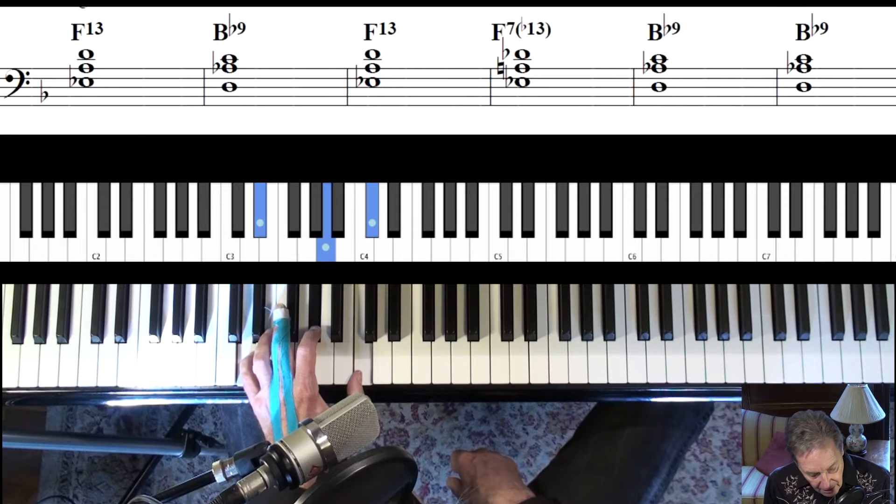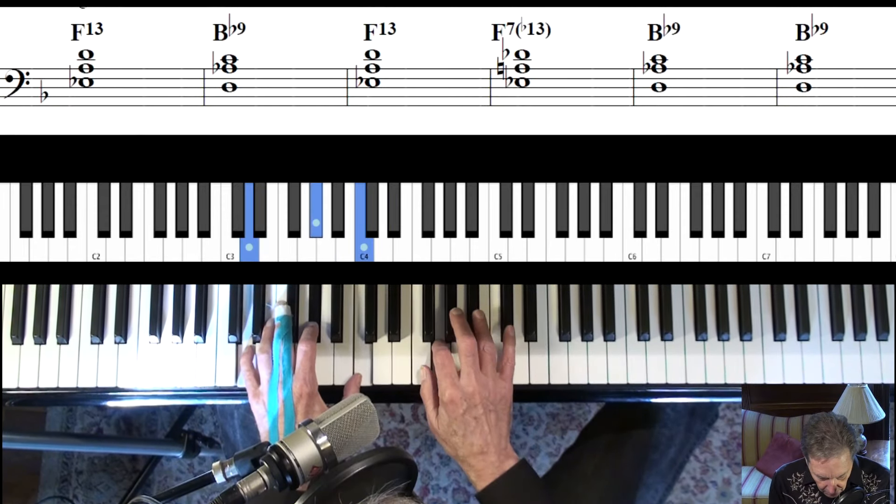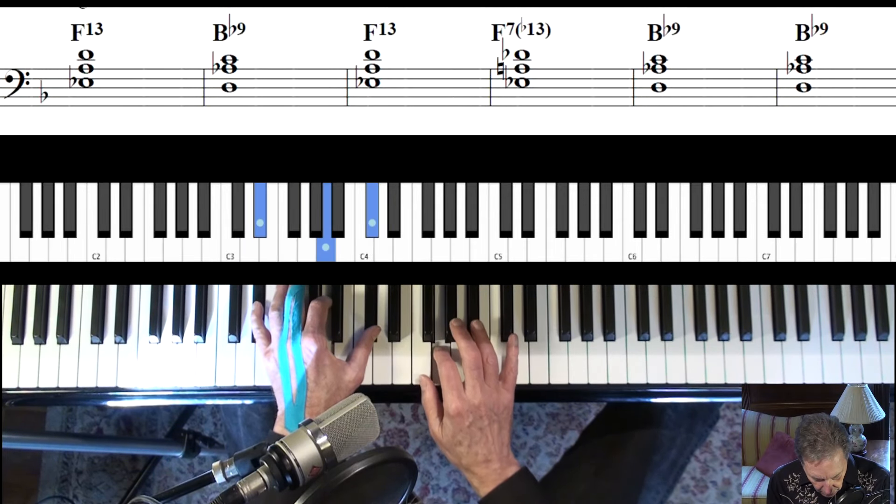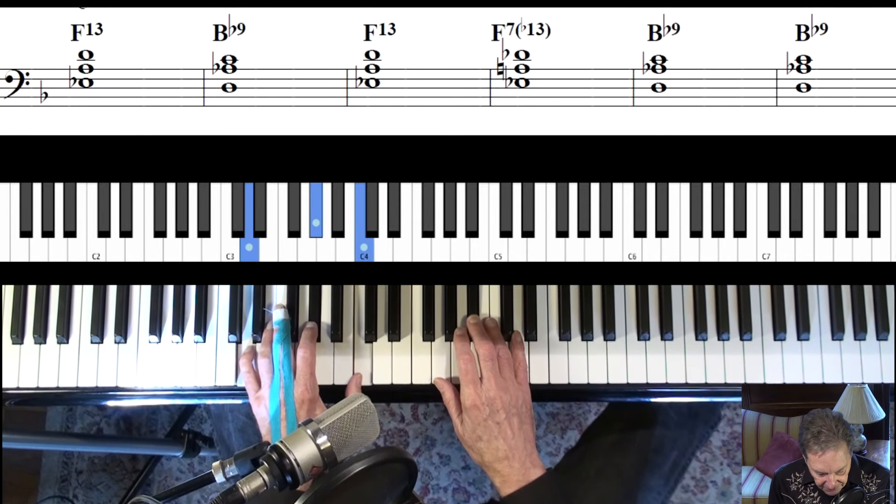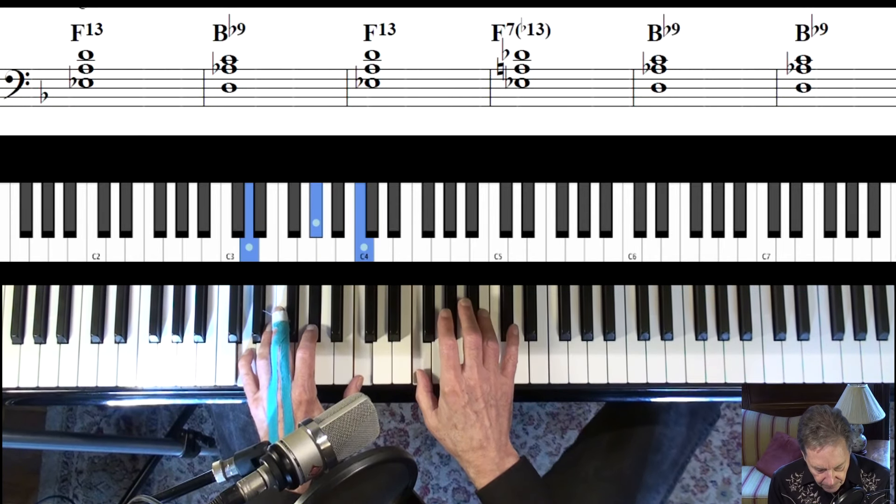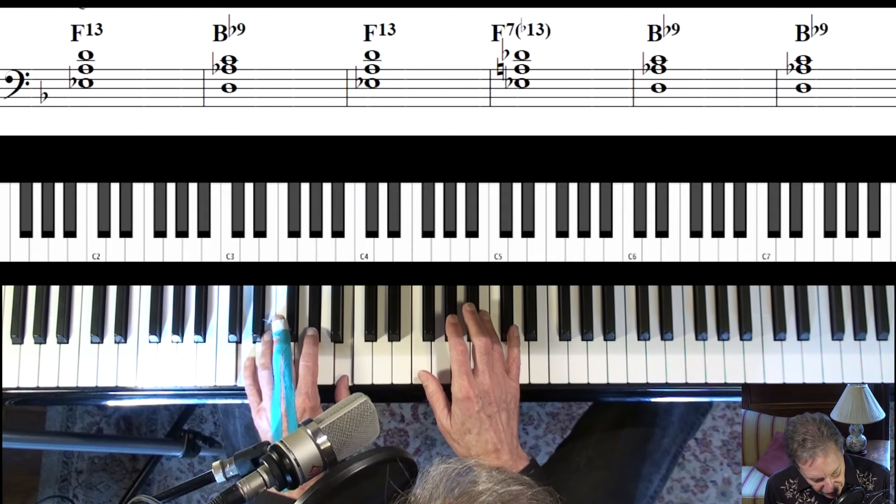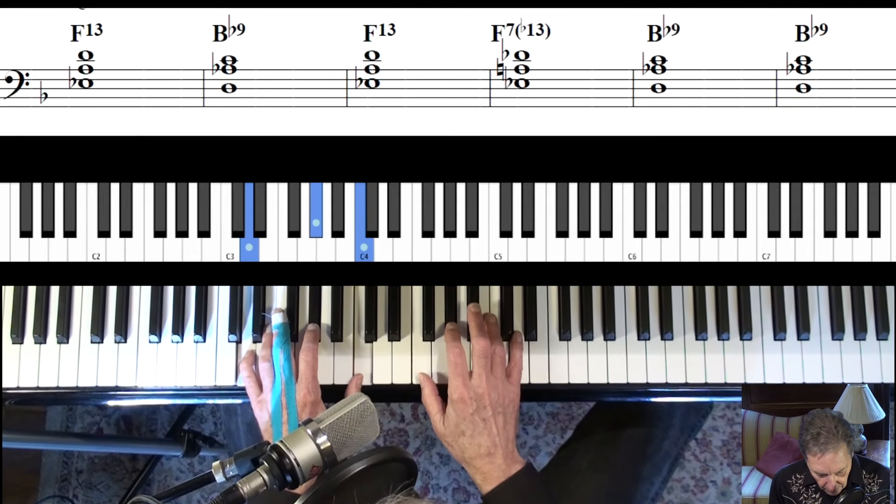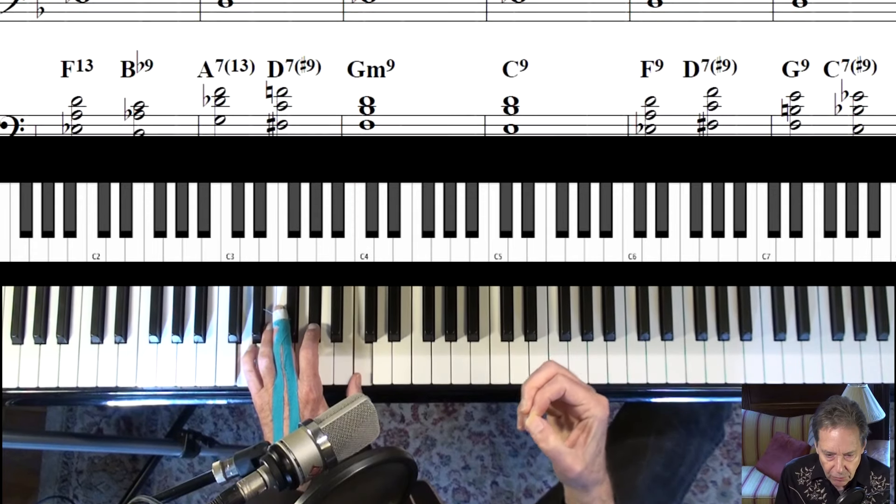And then we're going to go down a half step. So from the top, on to B flat. And B flat again. There's a real common change where you go to like a diminished chord there, but we're just going to stick to B flat.